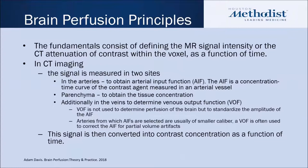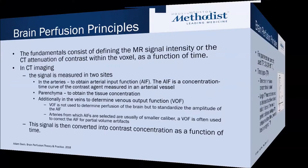In CT, it's measured in the arteries as well as in the parenchyma, the tissue of interest. In the arteries, we obtain an arterial input function — a concentration time curve of the contrast agent as it's given and measured through an arterial vessel. The parenchyma looks at the actual concentration over time in the tissue of interest, presumably the infarcted or ischemic tissue. Additionally, we get a third curve called the venous output function, used to standardize the arterial input function and control for partial volume artifacts that can occur in smaller caliber arterial vessels. This signal is then converted into contrast concentration as a function over time.